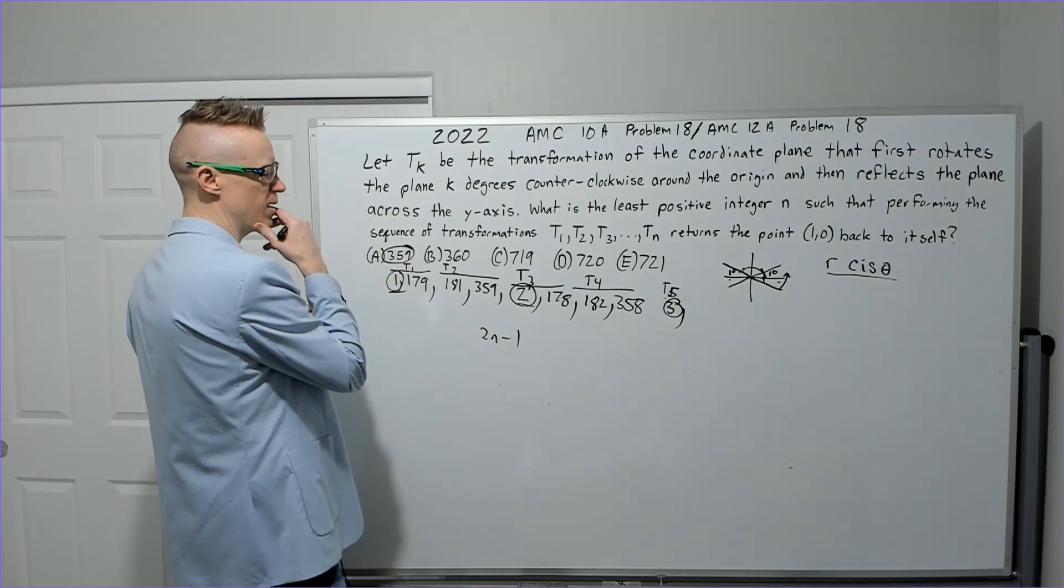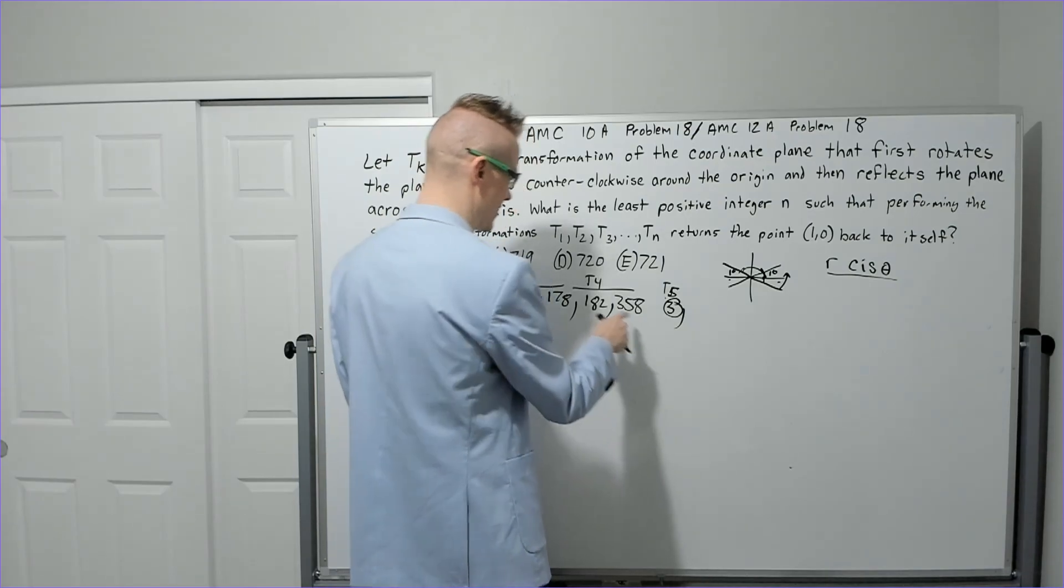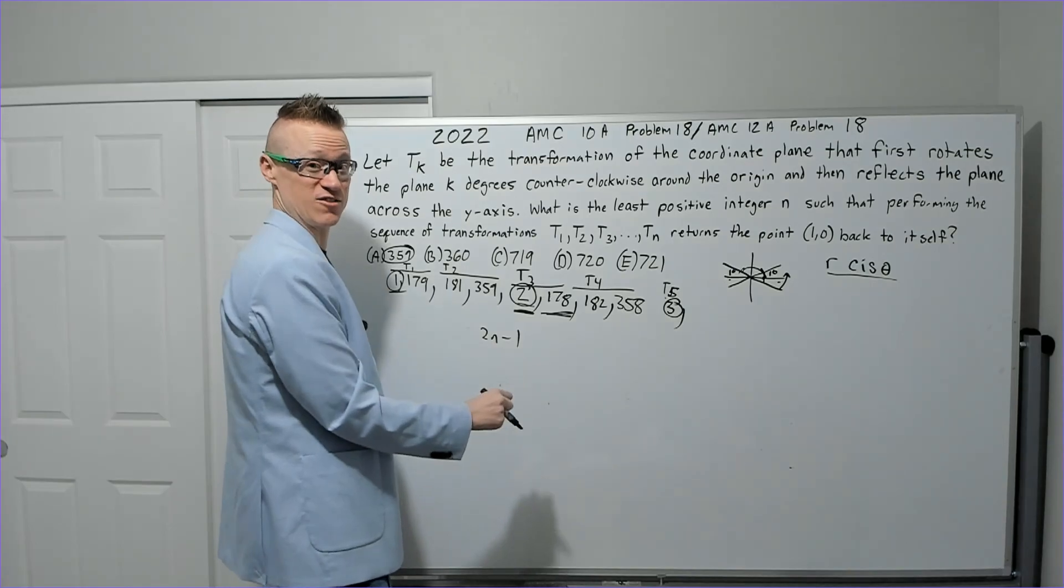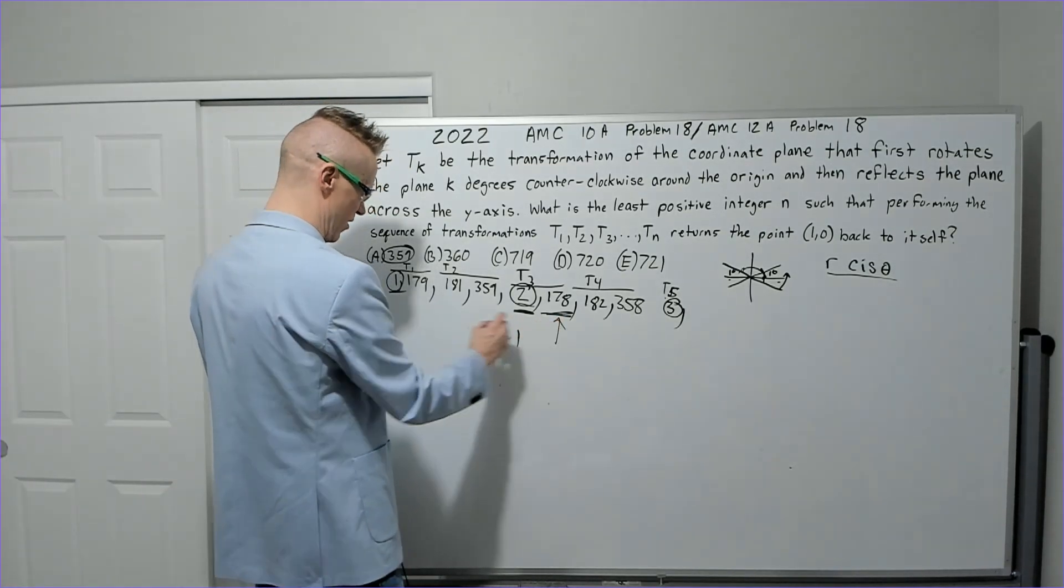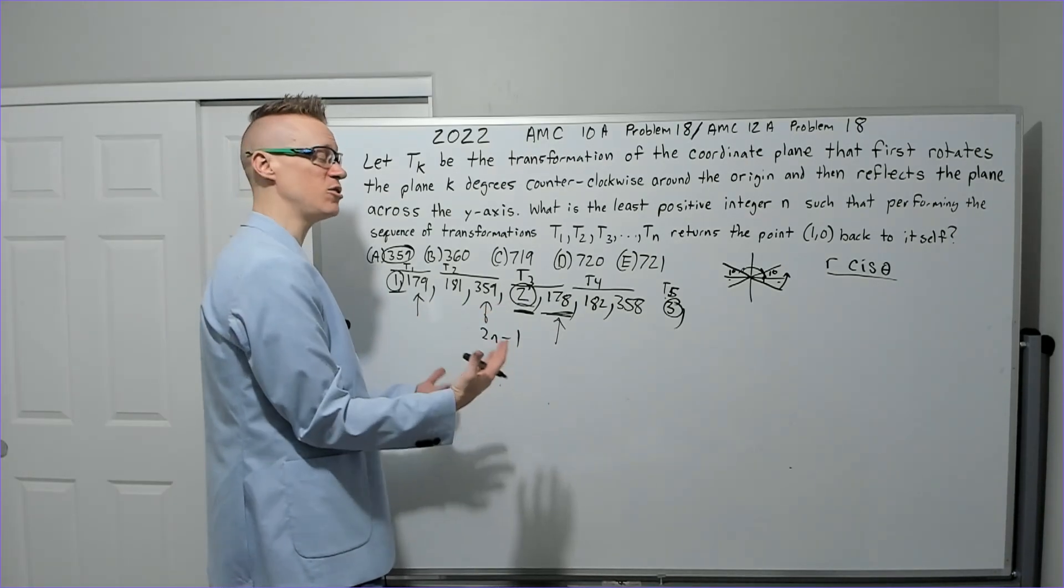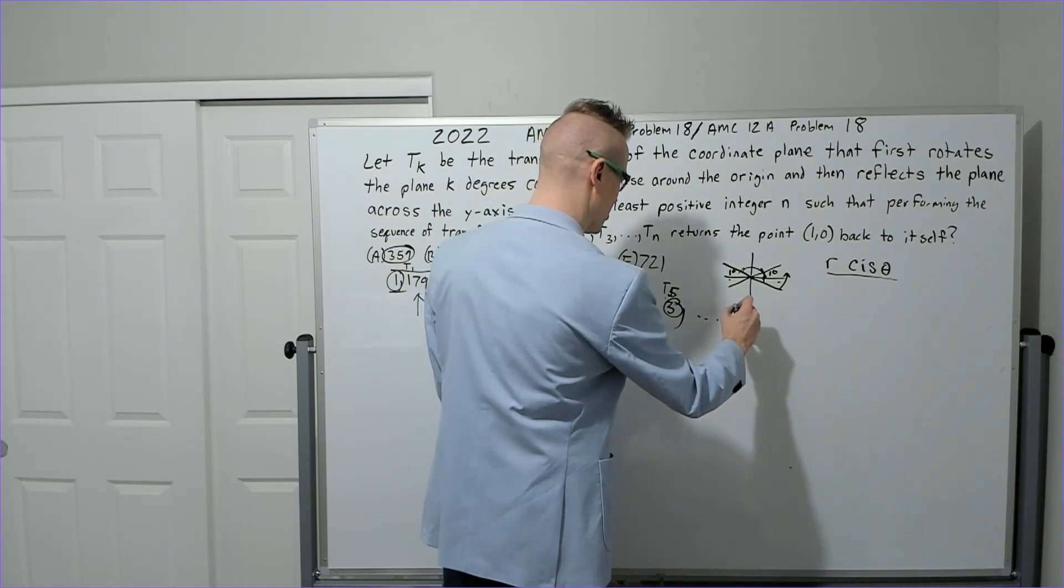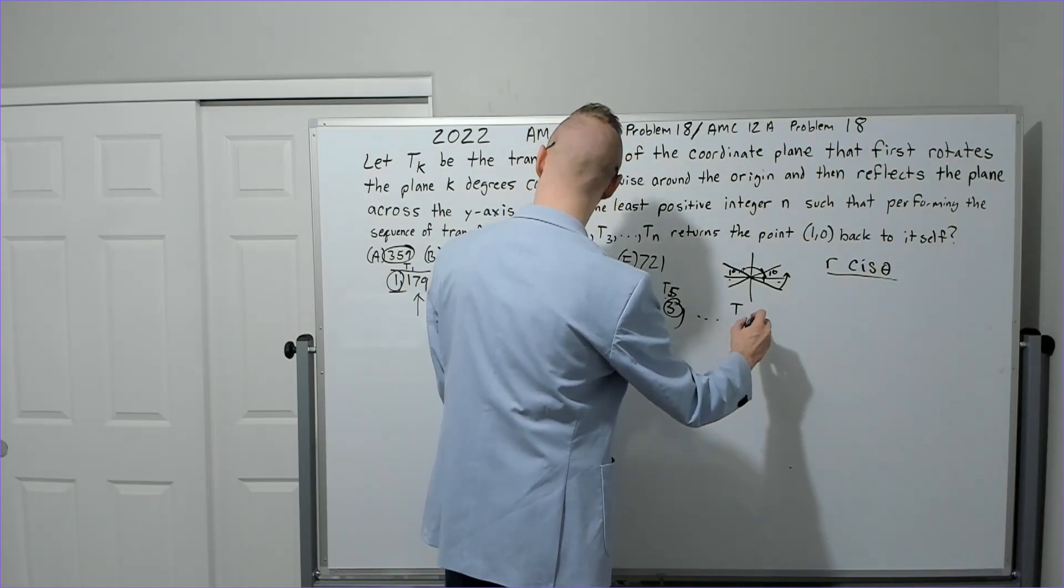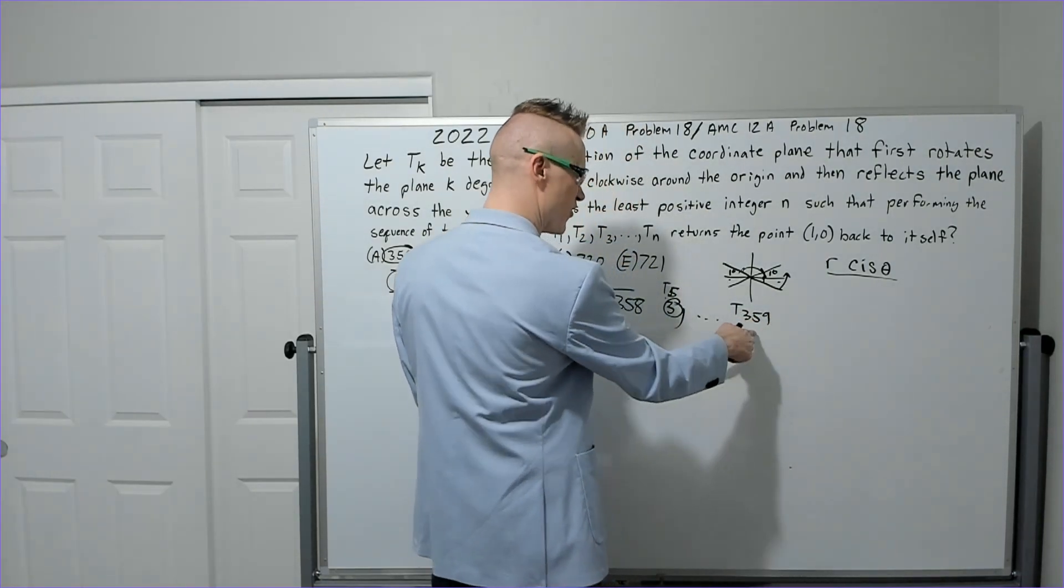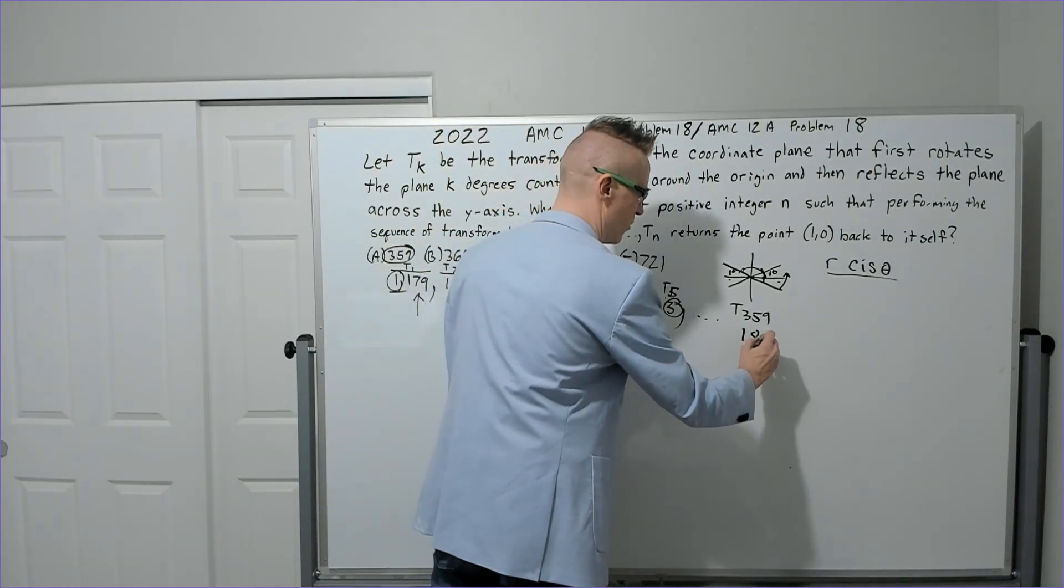So the 180th odd number would be this one, but we got to be careful. This is the first part of these transformations, not the full transformation. This is actually where it rests right here, but the first number we can still utilize. You're going to get to T sub 359, and your first number, not the end of the transformation, will be to put you at 180.